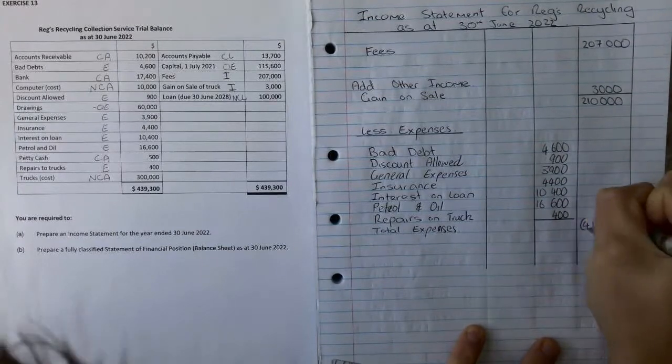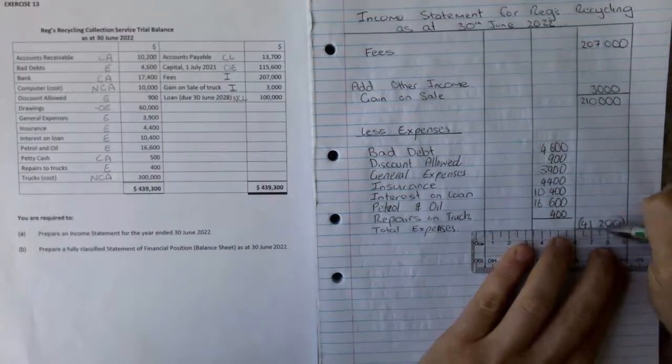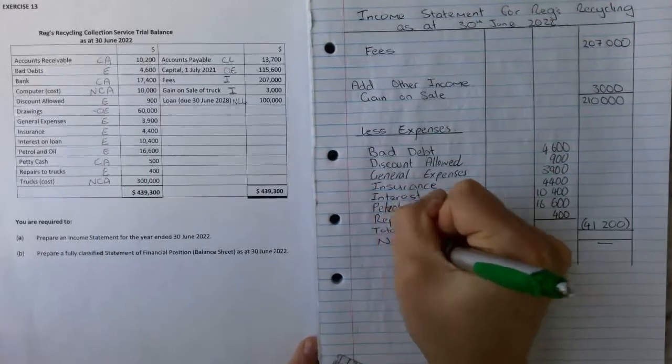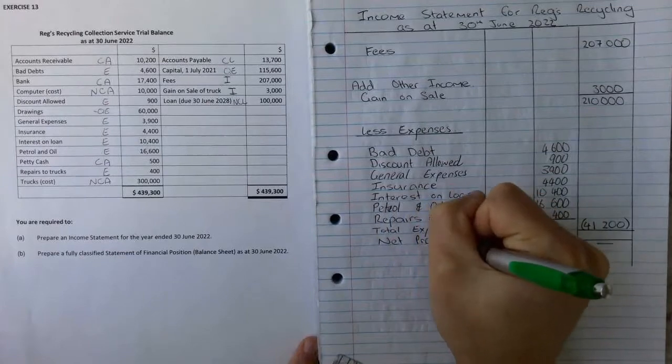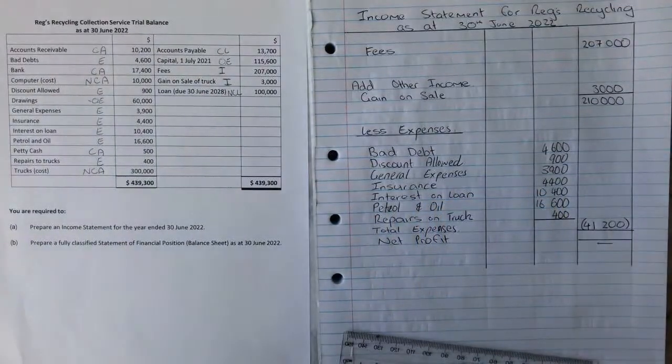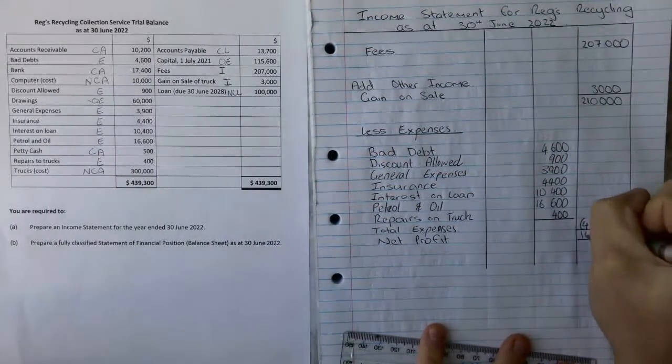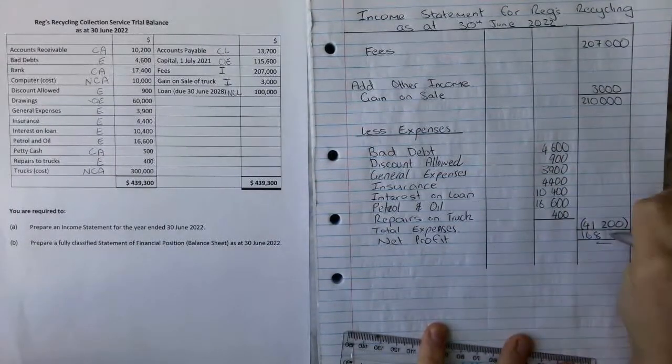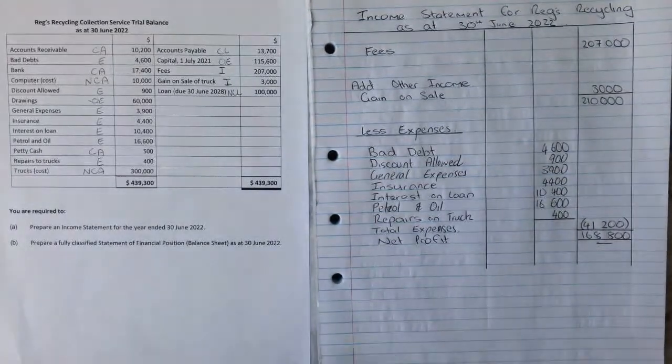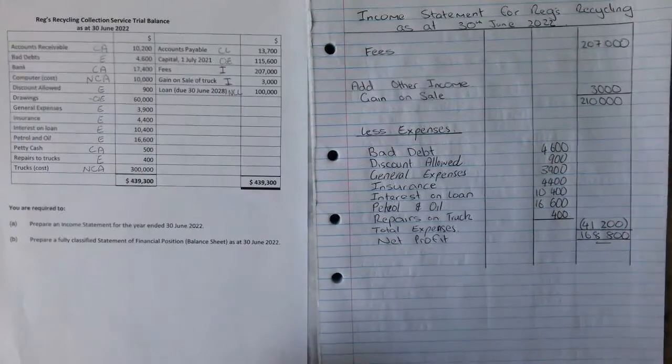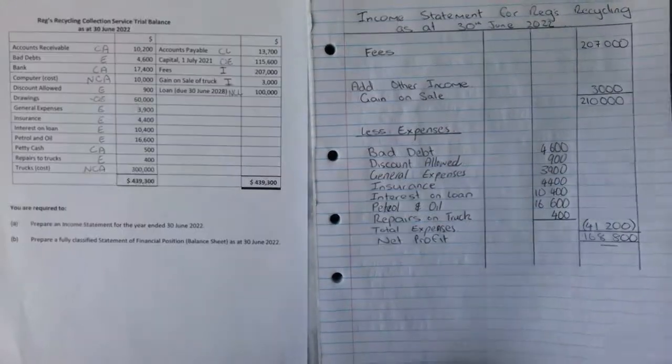Remember we're going to minus that, so we need to put it in brackets. That's going to lead us to our net profit, which we do need. Net profit equals our $210,000 minus our expenses equals $168,800. That gives us a nice wee starting point and that's our income statement. We're just going to put that over here and then we'll get started on our balance sheet.